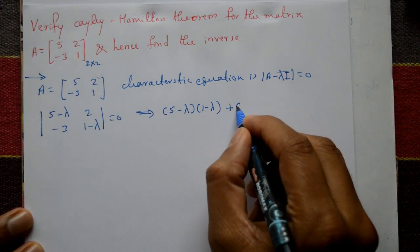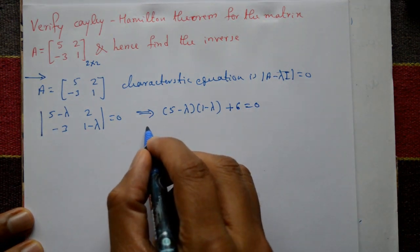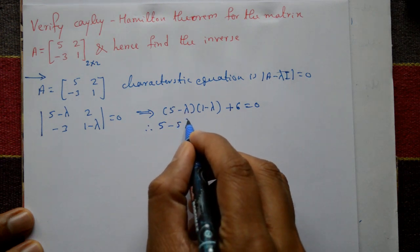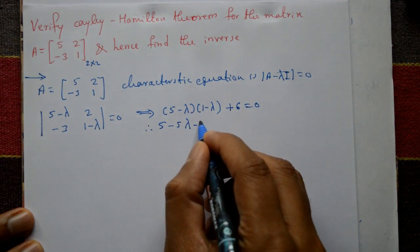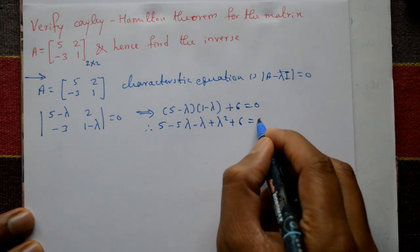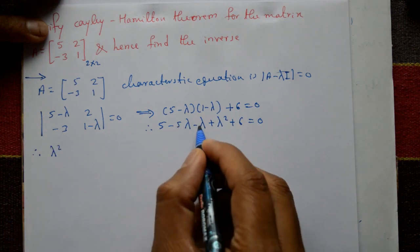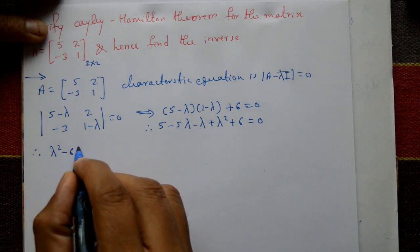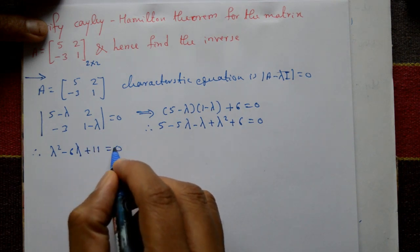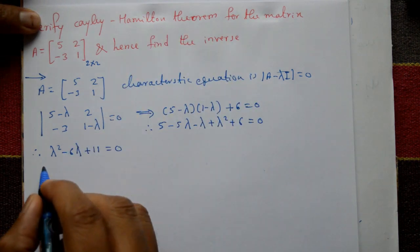Expanding the determinant: (5-λ)(1-λ) - (-3)(2) = 0. This gives (5-λ)(1-λ) + 6 = 0. Opening the bracket: 5 - 5λ - λ + λ² + 6 = 0, therefore λ² - 6λ + 11 = 0.